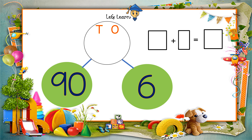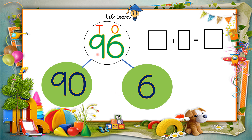Here you can see that the numbers are already in the split form: 90 and 6. First we are going to write the 1s — it's the reverse order. 6 will go up in the 1s column, and from the 10s side, 9 will go up — making 90 and 6, which is 96. Let's write the sum: 90 plus 6 equals 96.